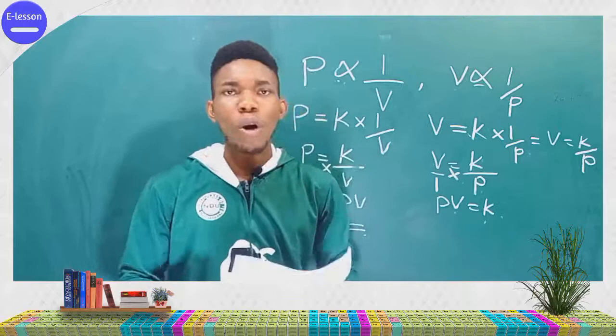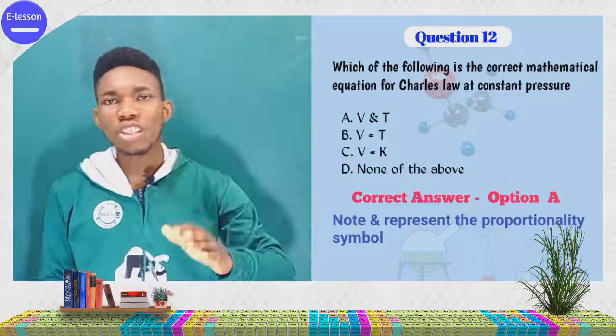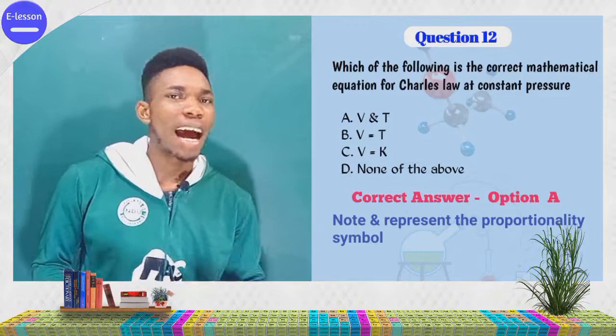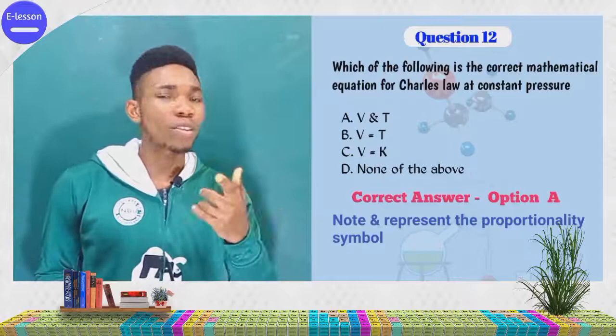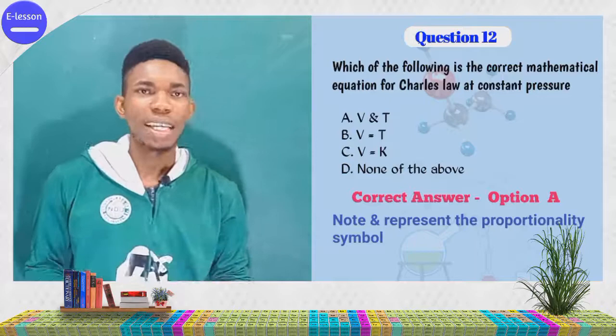Question two: which of the following is the correct mathematical equation for Charles's law at constant pressure? Charles's law states that at constant pressure, the volume is directly proportional to the temperature.